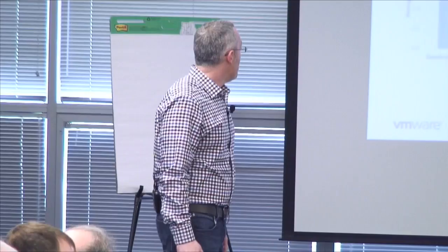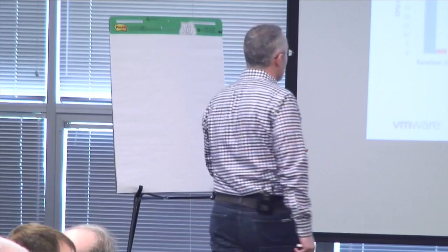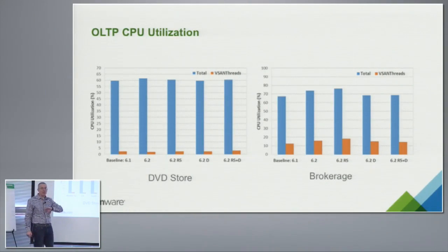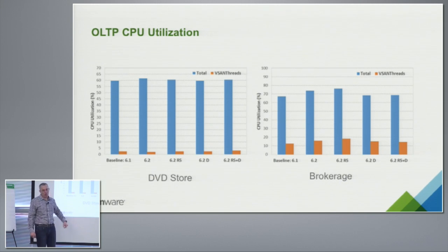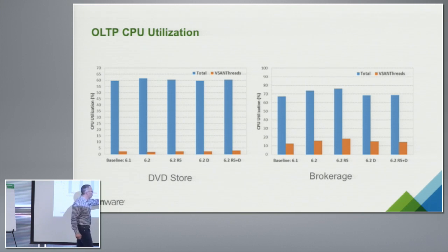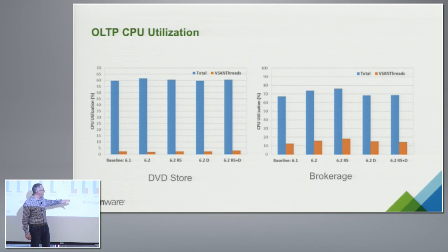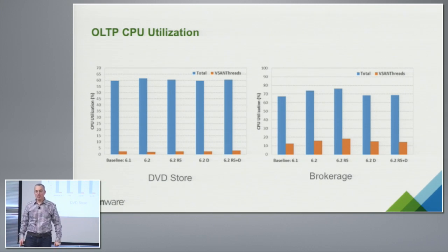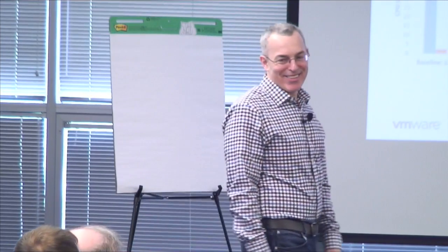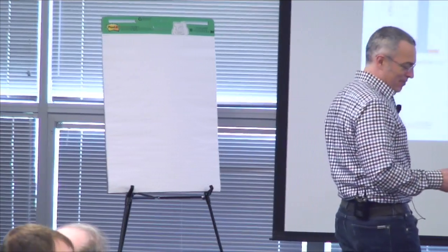CPU utilization for the transactional workloads: the DVD store, which is CPU-demanding but not in terms of IO processing, goes from about 3% to 4.2% — that's negligible. The brokerage workload goes from about 12% to 17-18% of overall CPU for vSAN. Interestingly, because of the increased latencies, we cannot push as many IOs, so the actual processing cost goes down. The CPU cost per IOP is about the same, but there are fewer total IOs.